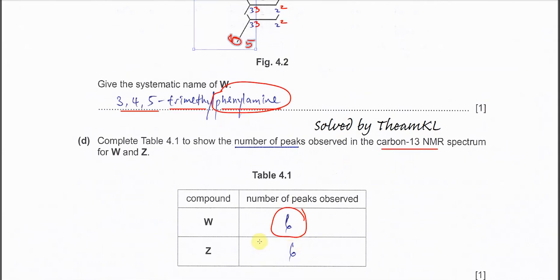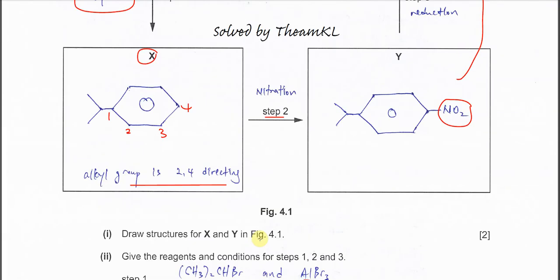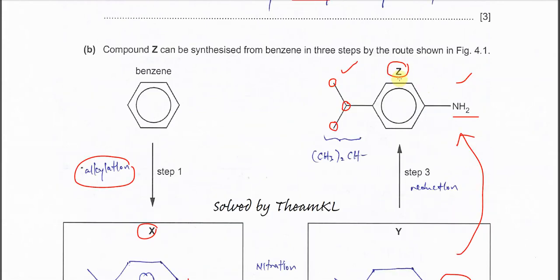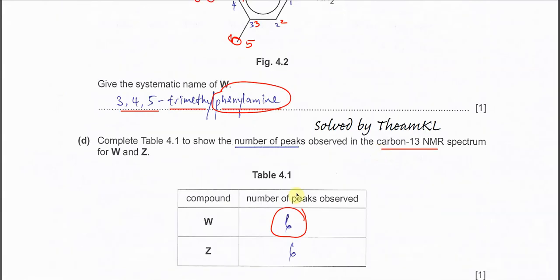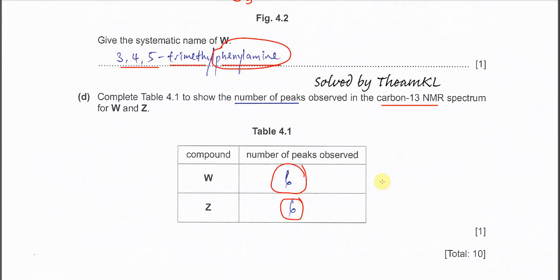How about Z? How many different carbons are in there to give the signals? This one is one, two, three, four, five, six - same as W. Therefore, also six peaks. That's all for this question. Thank you.